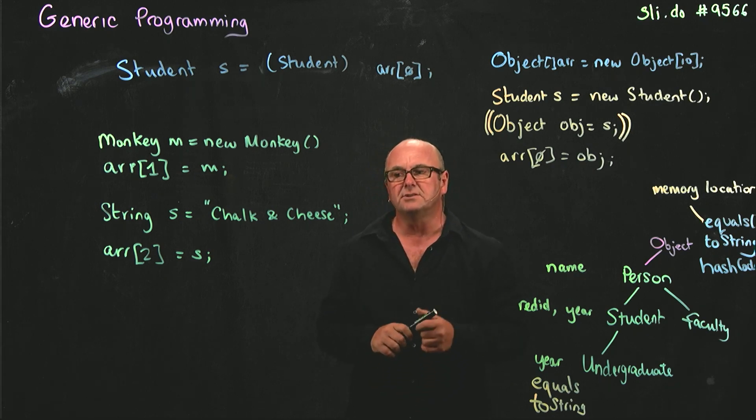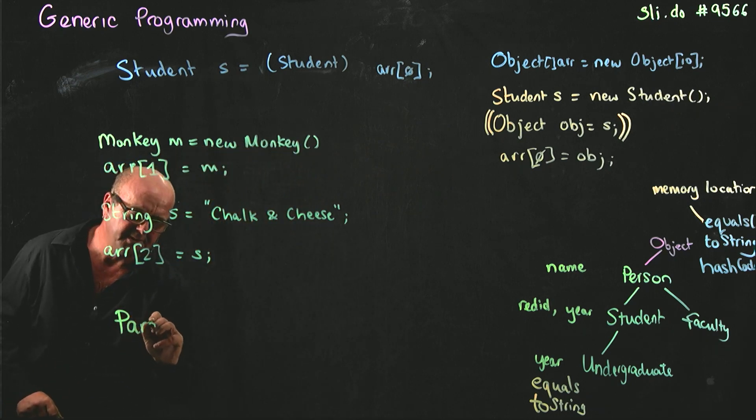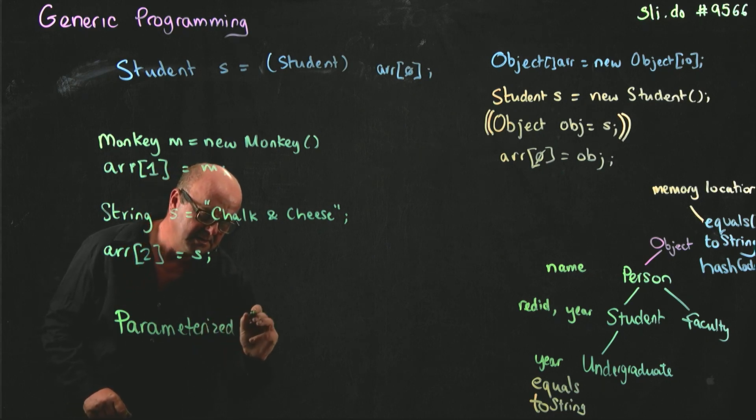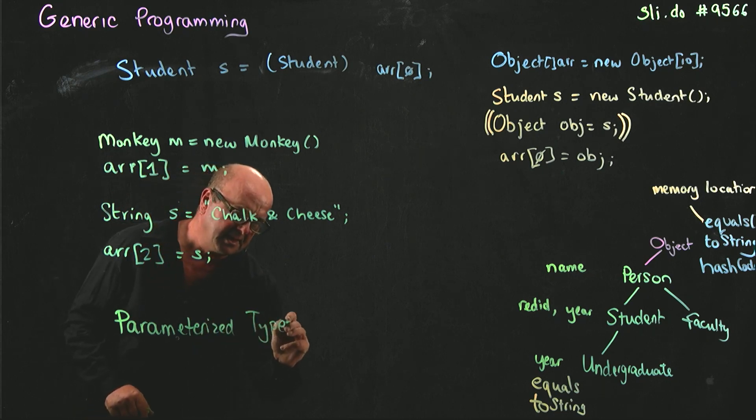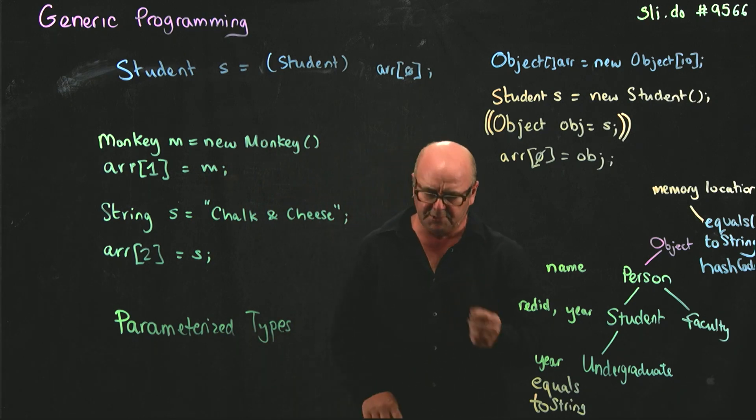And so the solution to this is what is called parameterized types. And as we'll see, parameterized types allow us to define what we're going to put in a particular kind of container.